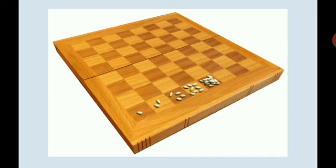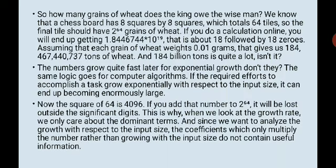So he actually went and tried how it goes. One, then two, then four, then sixteen, it kept on increasing. So how many grains of wheat does the king owe the wise man? We know that a chessboard has 8 squares by 8 squares, which totals 64 tiles. So the final would be 2 to the power 64 grains of wheat.